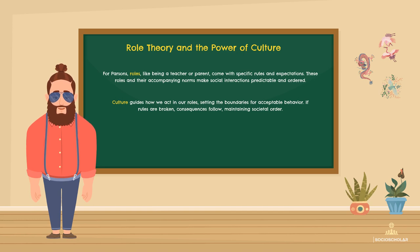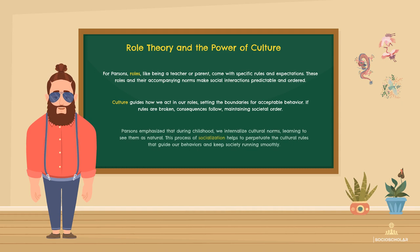Parsons also believed that during our childhood, we learn to accept these cultural rules as natural, or the way things are. This process is called socialization. So, as a child learns to say please and thank you, according to Parsons, they are internalizing cultural norms that guide behavior. And by accepting and following the cultural rules related to our roles, we help keep society running smoothly.